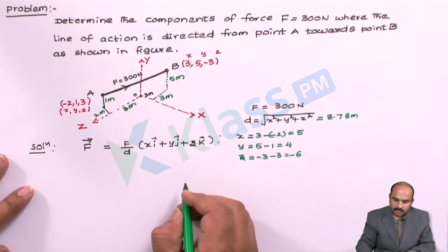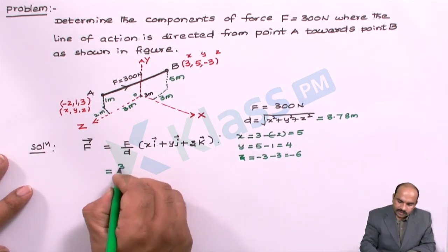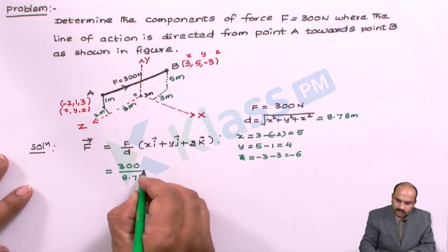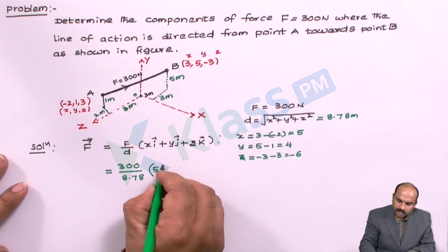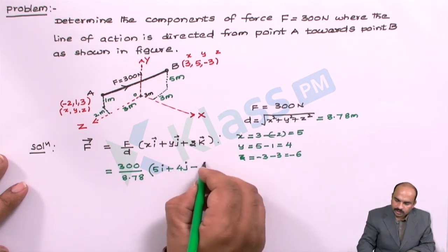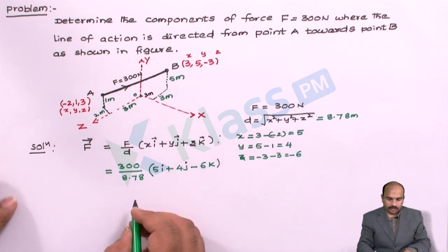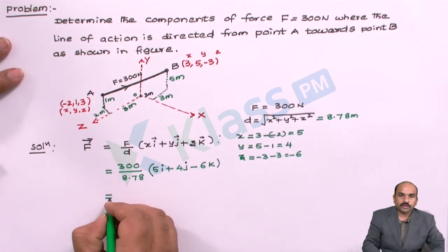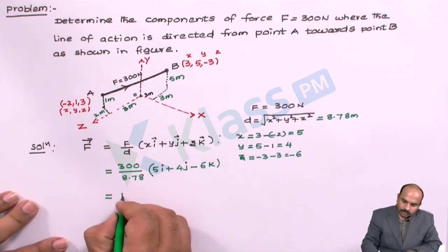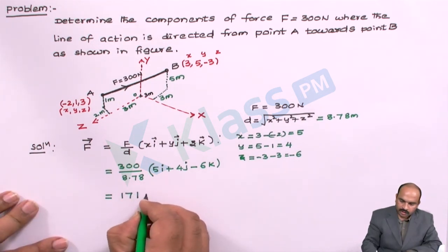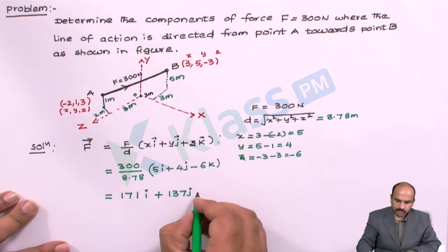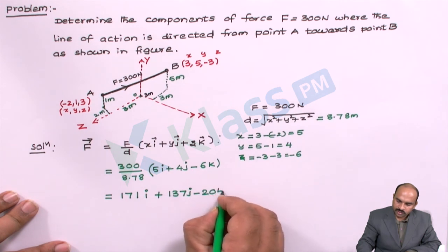Now substituting into the formula: F = (300 / 8.78) × (5i + 4j − 6k). Simplifying this, we get the vector sum as approximately 171i + 137j − 205k Newtons. This is the total vector sum.